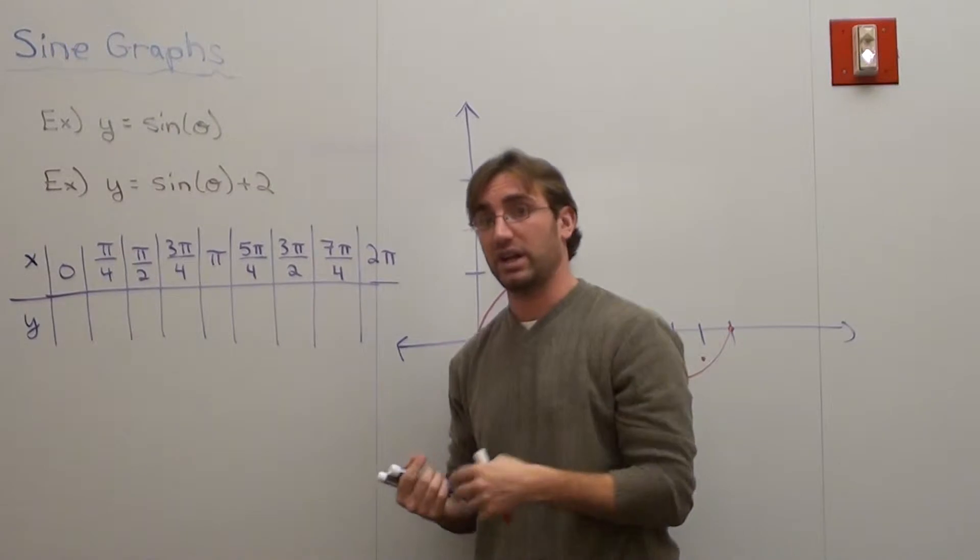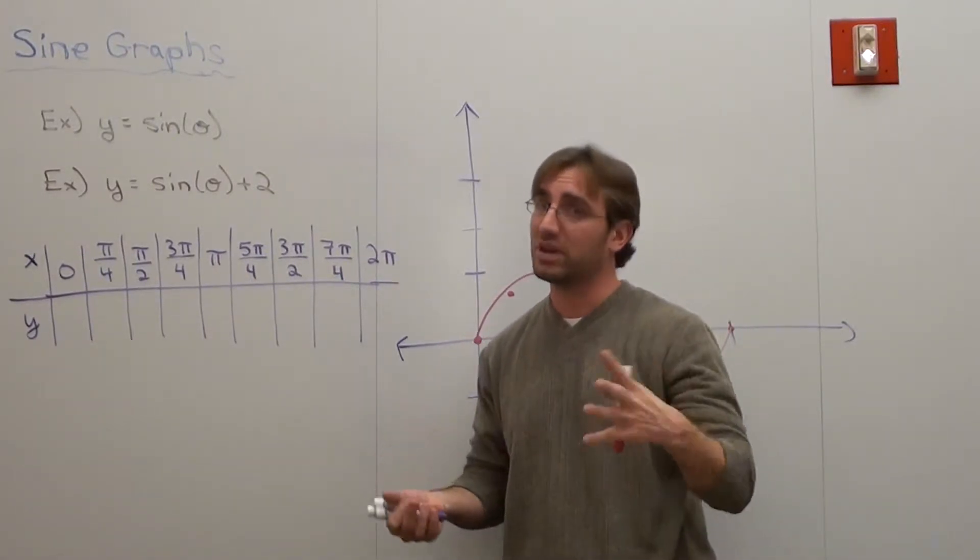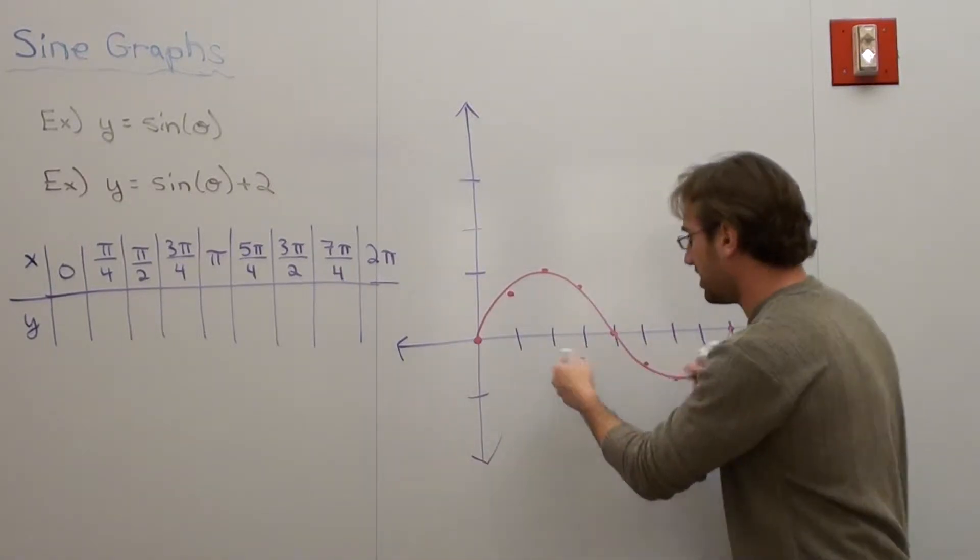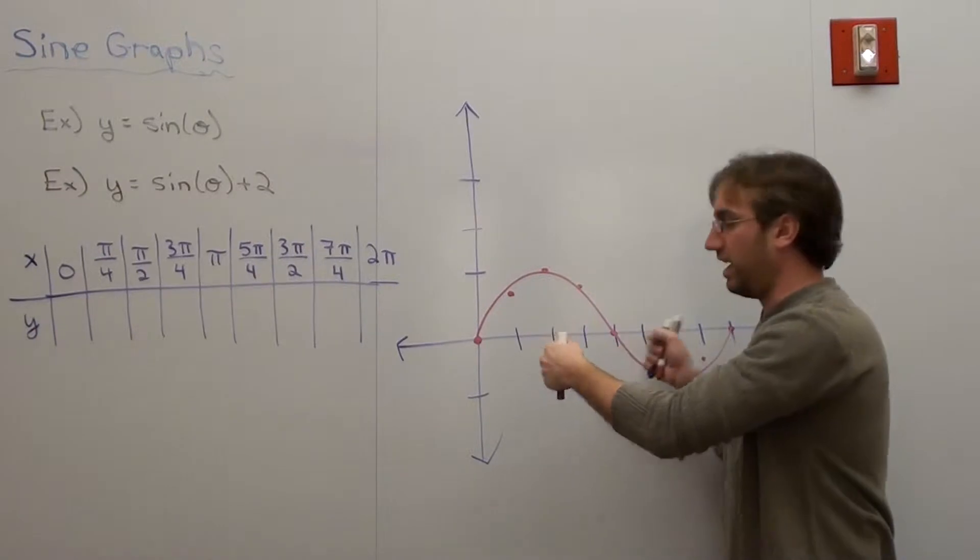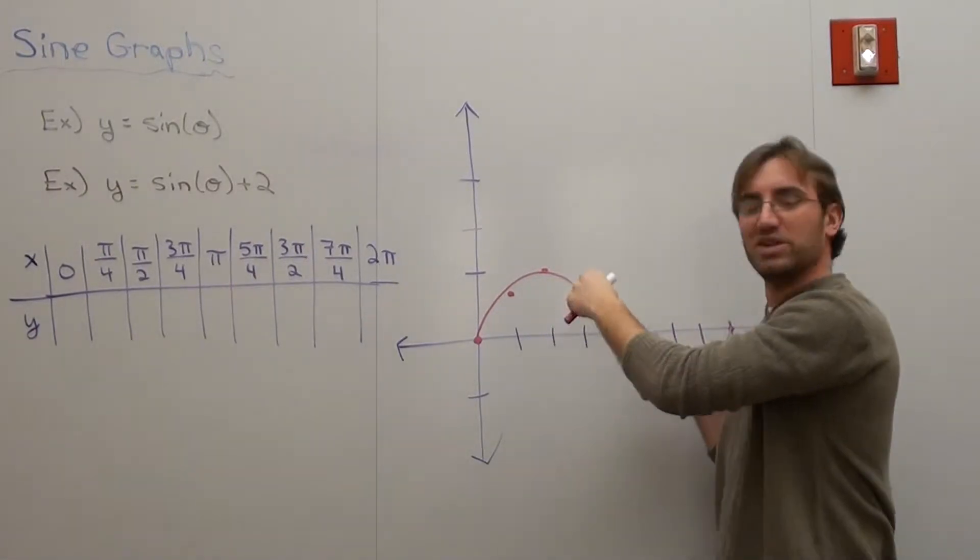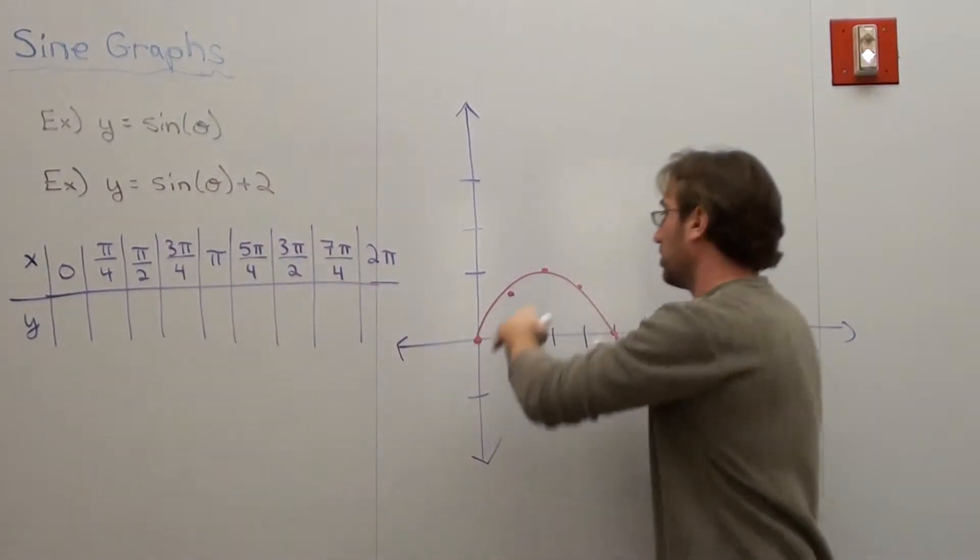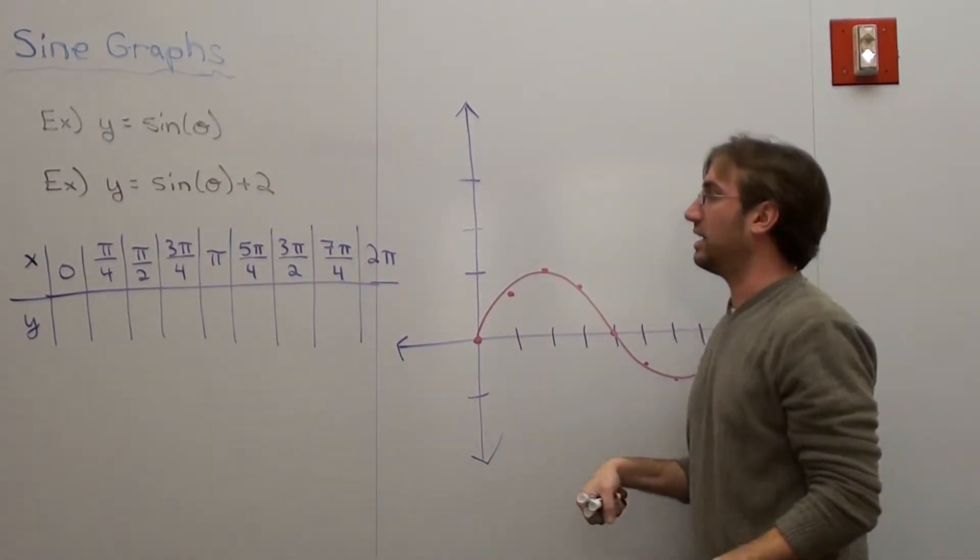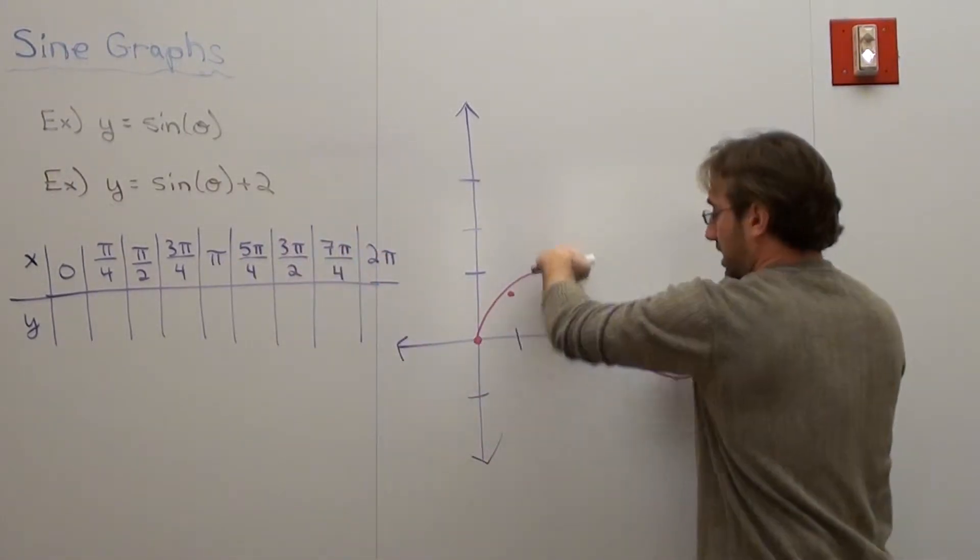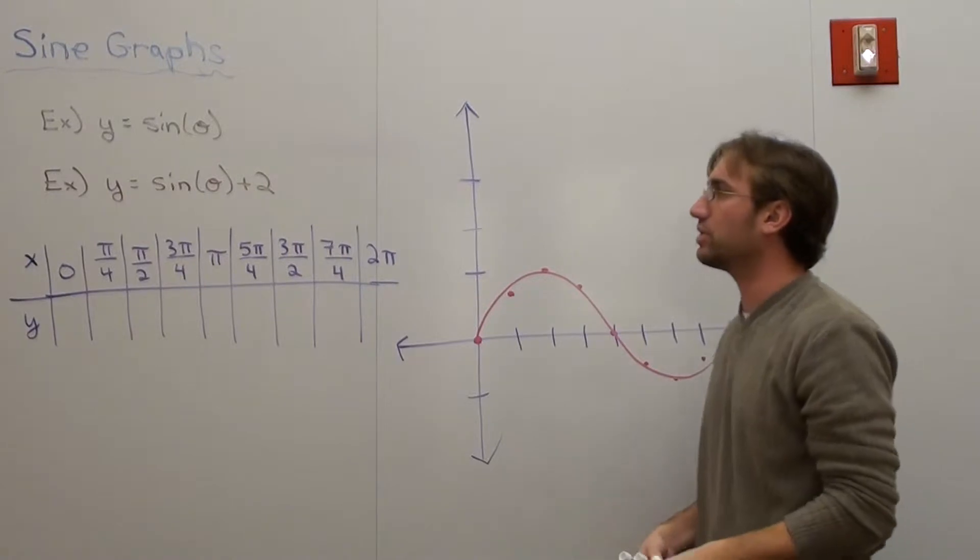This time what we're doing is we're working on a vertical shift, and it's exactly like it sounds. Vertical shift means that I'm taking this graph, and I'm going to pick it up, and it'll be solid, like a piece of metal. And if it's plus a number, I'm going to take it and put it like that. And if it's a minus number, then I'm going to take it and put it like that. Pretty cool.